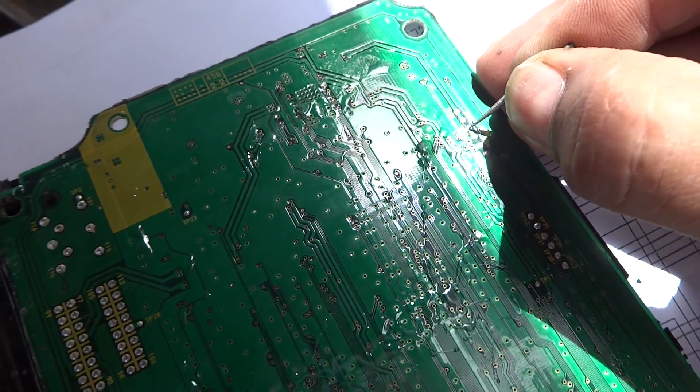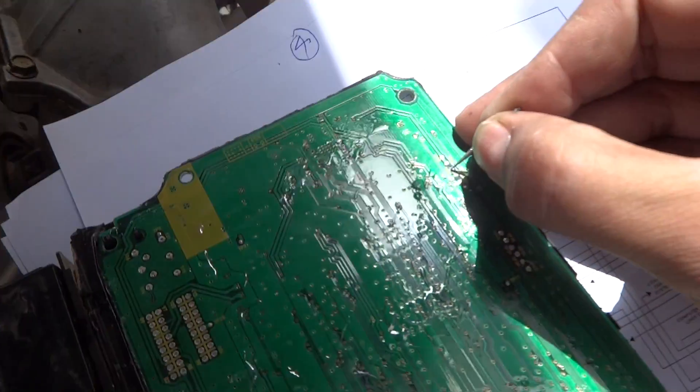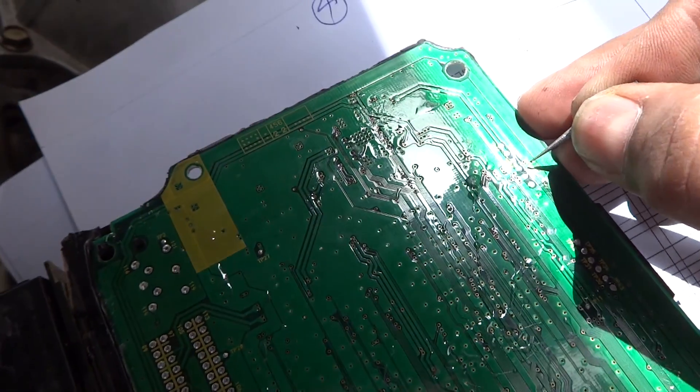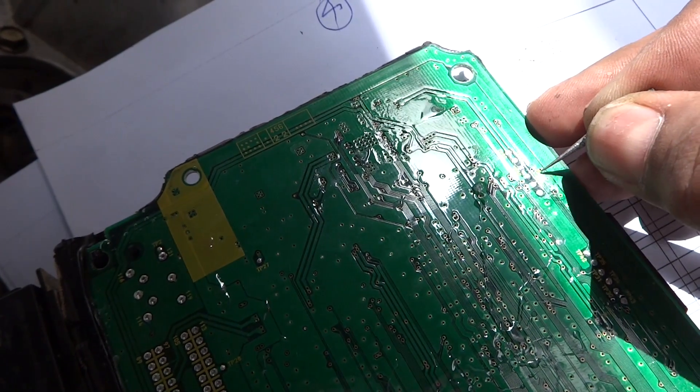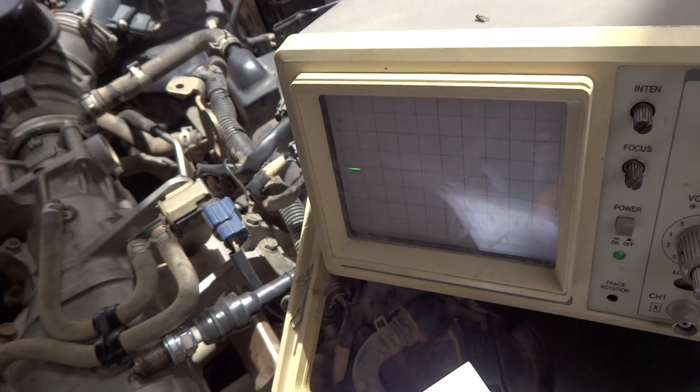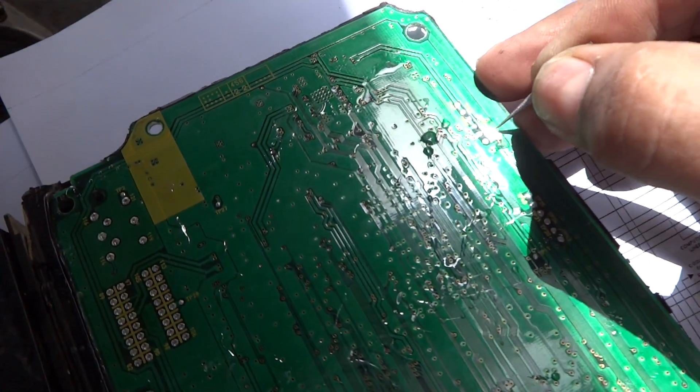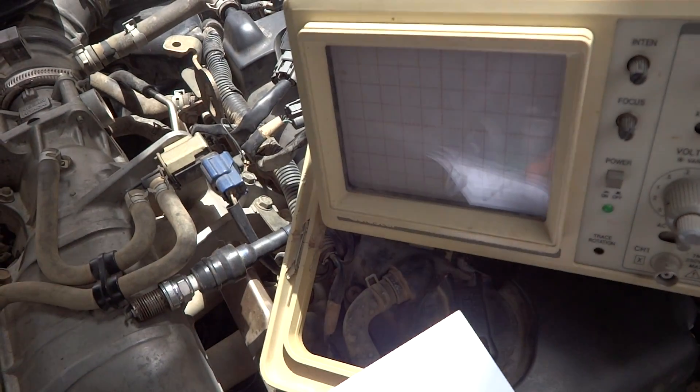Test point 80 shows ground, which is okay. Test point 81 shows zero ground. Test point 84 shows 5 volts, which is okay.